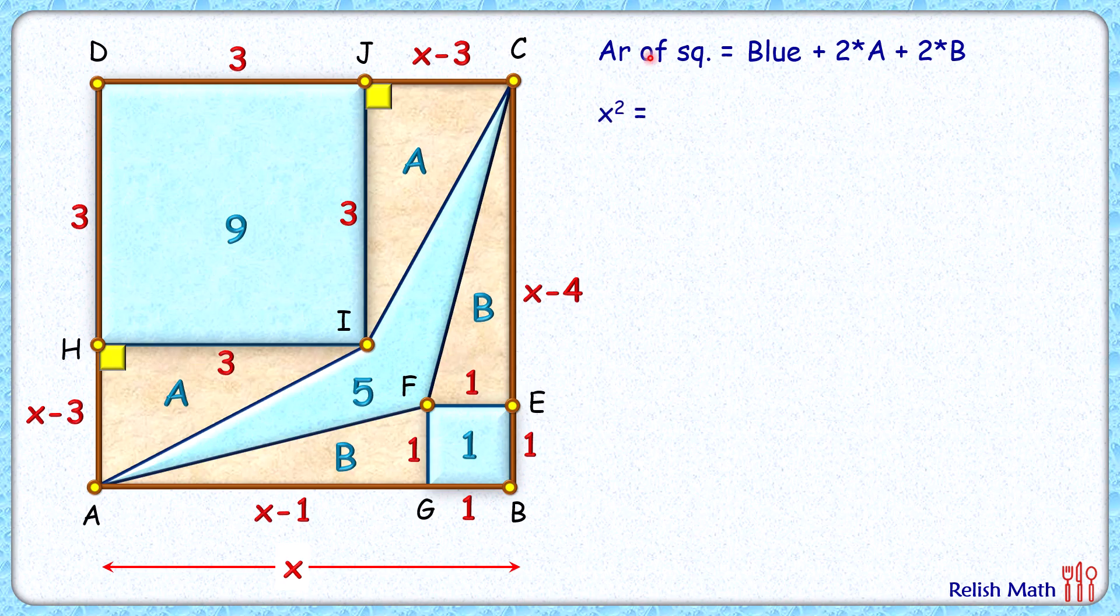Area of the square is x square, and blue region area is 9 plus 1 plus 5, that's 15 centimeters square.